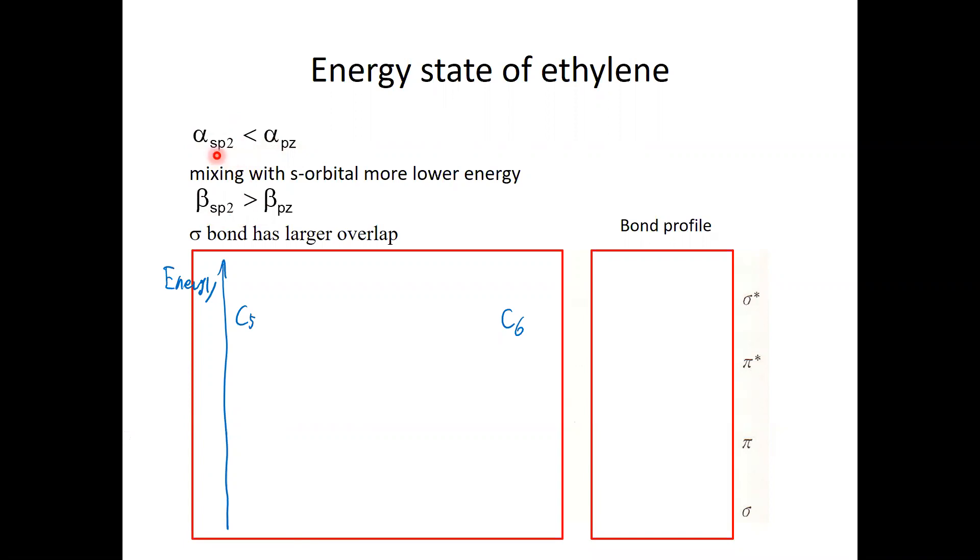That's why if s is mixed with p, the sp2 or sp3, this atomic orbital energy is lower than the p orbital. And also you have to keep in mind that the beta is the overlap potential. So meaning that if the overlap is larger, this beta is larger. So meaning the sigma bond has a larger overlap, meaning that the beta sp2 is larger than the beta pz.